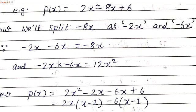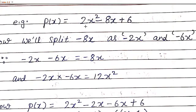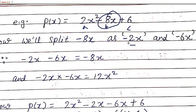We'll see this with an example. We have a quadratic polynomial in which a is 2, b is minus 8 — note b is minus 8, not 8 — and c is 6. To find the zeros of this quadratic polynomial we use the method of splitting the middle term. We choose two terms which when added equal minus 8x; I've chosen minus 2x and minus 6x, since minus 2x plus minus 6x equals minus 8x.